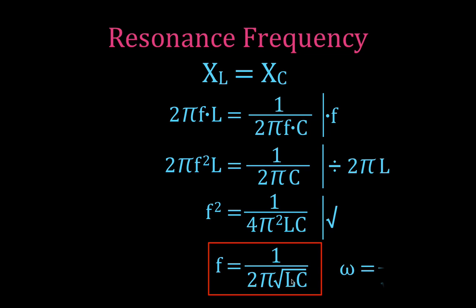If we want our answer to be in radians, then this is the equation that we use. Omega, the angular frequency, is equal to 1 over the square root of LC like that. So we can use either equation depending on whether we want to answer in hertz or in radians.